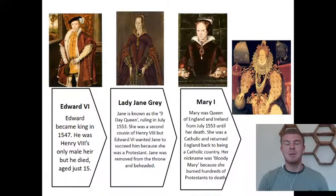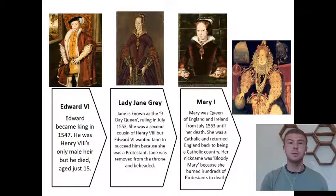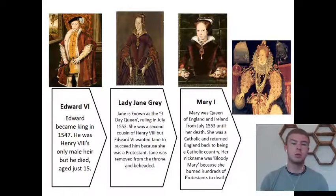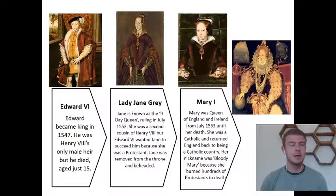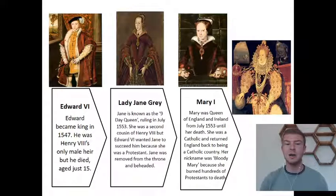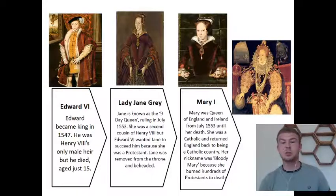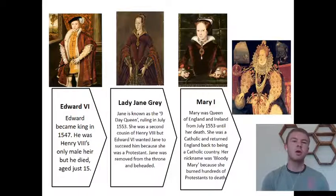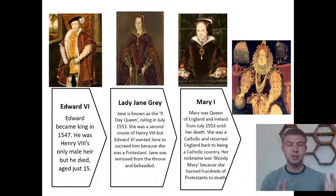The first person who replaced Henry VIII was his son Edward VI, from his third wife Jane Seymour. Edward became king in 1547 but sadly died when he was only 15 years old. Then it passed to a woman called Lady Jane Grey. Some people don't even count her as a queen because she only ruled for nine days in July 1553. Edward VI wanted Jane to succeed him because she was a Protestant — he didn't want to undo Henry VIII's efforts to change England from Catholic to Protestant.